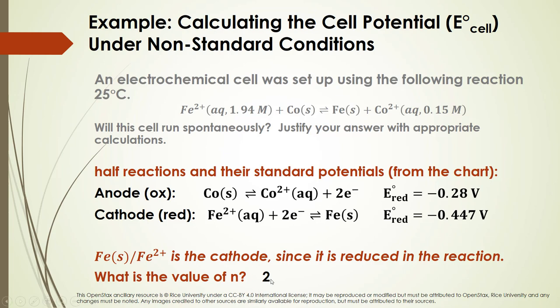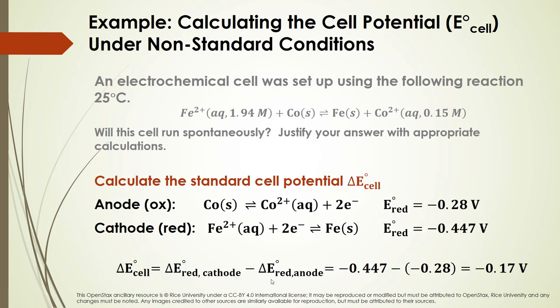Looking at the reactions, we see 2 electrons transferred. The standard cell potential equals the standard reduction potential of the cathode minus that of the anode: negative 0.447 minus negative 0.28 volts, giving negative 0.17 volts. Just looking at the standard cell potential, it's negative, which tells us this reaction is not spontaneous as written — it would not be a galvanic cell.